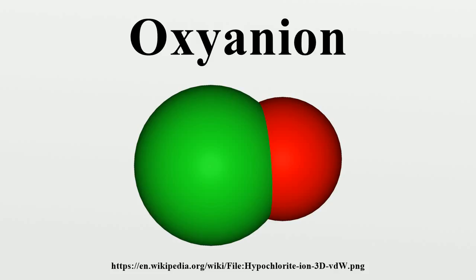Each nominal silicon ion is attached to two nominal oxide ions and has a half share in two others. Thus the stoichiometry and charge are given by: Si + 2O + 2×(½O) = SiO3; charge: +4 + (−2×3) = −2. A ring can be viewed as a chain in which the two ends have been joined. Cyclic triphosphonate P3O9^3- is an example.